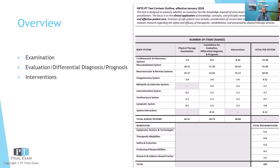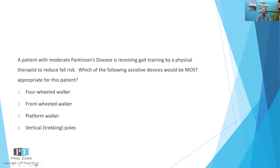All right, so without further ado, I will read to you the practice question, give you a moment to respond, and then we'll talk about it together and get this locked into your head for test day. A patient with moderate Parkinson's disease is receiving gait training by a physical therapist to reduce fall risk. Which of the following assistive devices would be most appropriate for this patient?